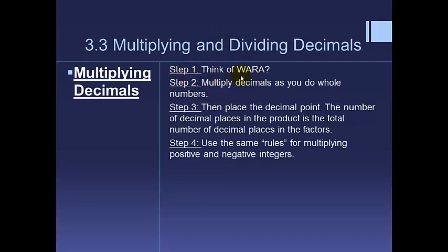Pause the screen and write down these steps. Step one: think about what a reasonable answer is. Step two: multiply your decimals as you would with whole numbers. Step three: place the decimal point — the number of decimal places in the product equals the total number of decimal places in the factors. Step four: since you're in seventh grade, use the same rules for multiplying positive and negative integers.